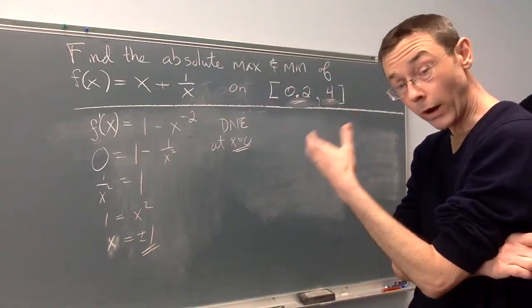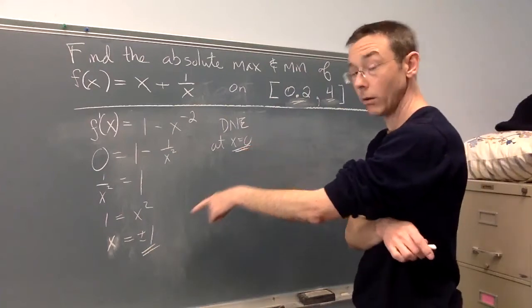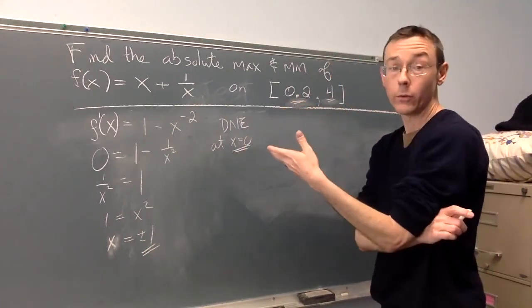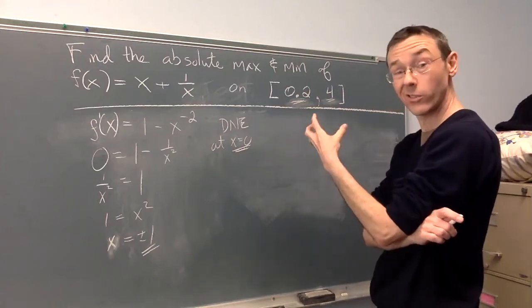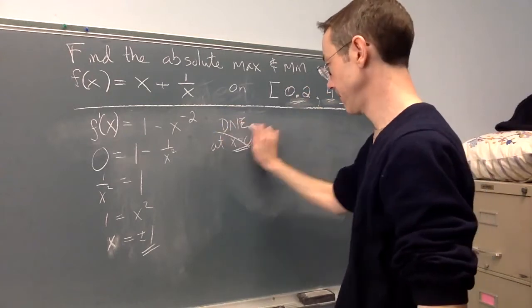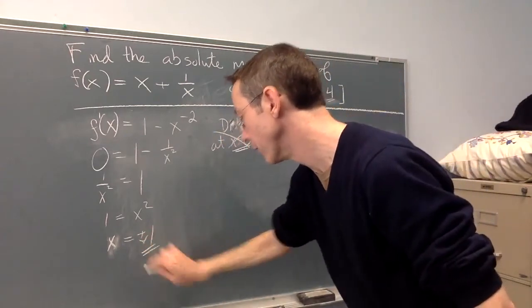But we can rule two of these out right away. x = 0 and x = -1 are not inside this interval, so we don't need to worry about them. We're specifically interested in the max and min between these two values. So we can ignore this, and we can ignore the -1.